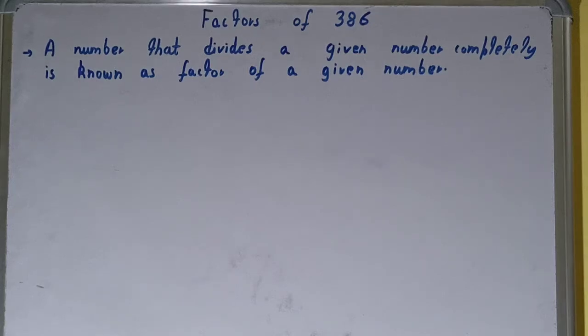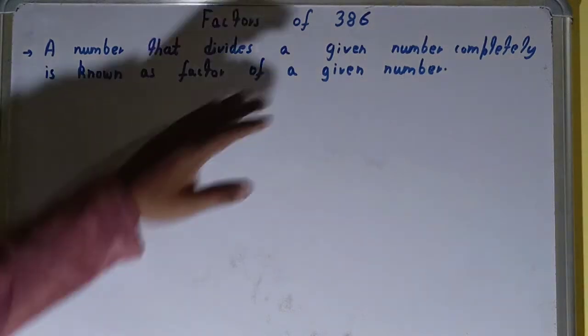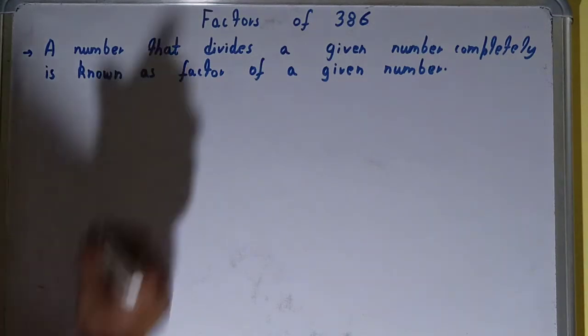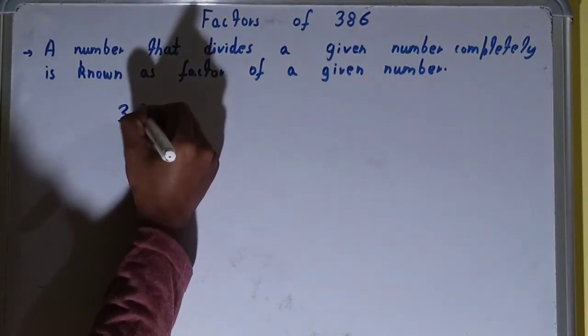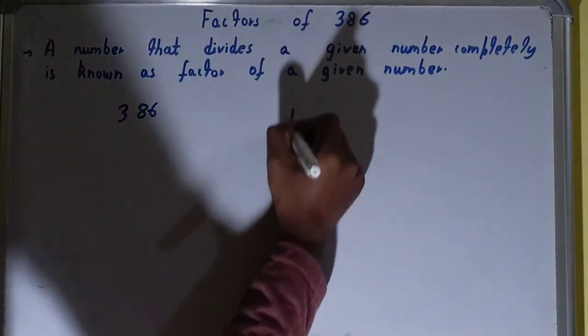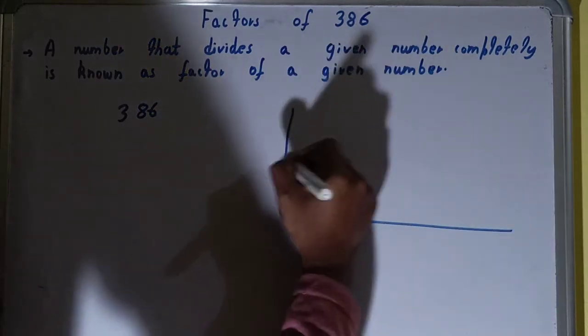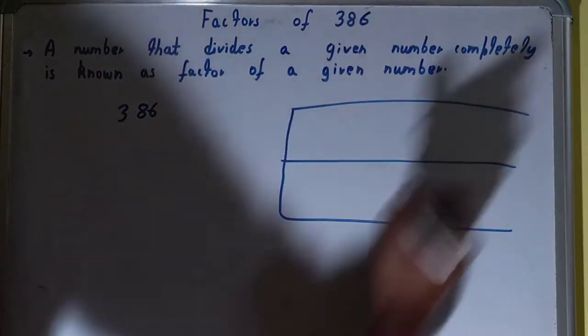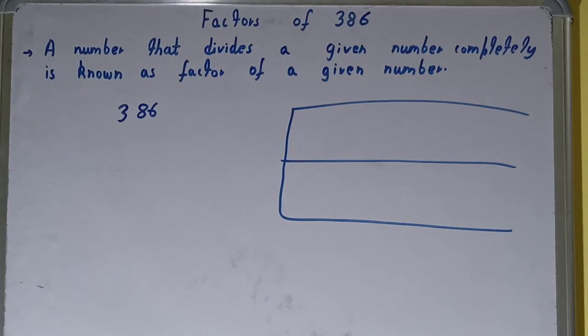Hello friends, in this video I'll be helping you with the factors of the number 386. So let's start. To find it out, you need to write the number like this and draw like this. Once you are done with that, you need to start with the lowest natural number, that is 1.